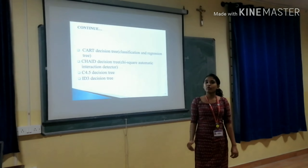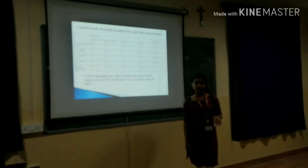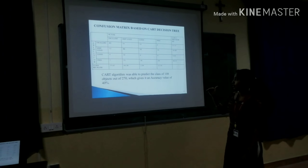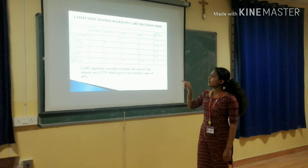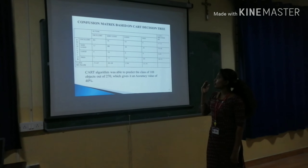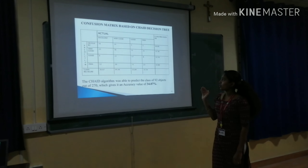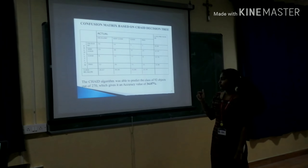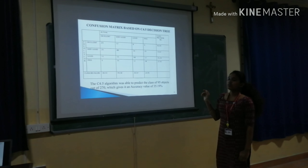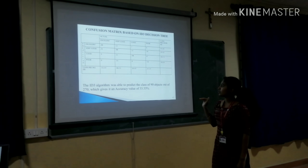The decision tree algorithm is a supervised machine learning algorithm. It is based on conditions of decisions and the structure includes tree nodes and leaf nodes. There are four types of decision tree: CART (Classification and Regression Tree), Chi-Square Automatic Interaction Detector, C4.5, and ID3. The confusion matrix, also known as the error matrix, is based on the performance of the classification model, comparing prediction and actual values. Using the CART algorithm on 270 objects, 108 were correctly predicted, giving an accuracy of 40%. The Chi-square decision algorithm took 92 objects out of 270 with an actual accuracy of 34%.